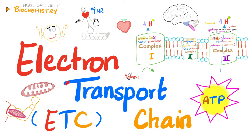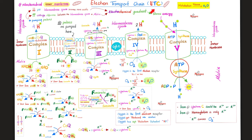By the way, to learn more about the electron transport chain, I have a video titled Electron Transport Chain in my biochemistry playlist. Oxidative phosphorylation — the oxidative part involves oxygen at complex four, and the phosphorylation part is the phosphorylation of ADP so that it becomes ATP. Medicine makes so much sense once you understand what you're talking about.